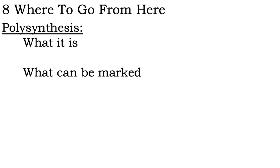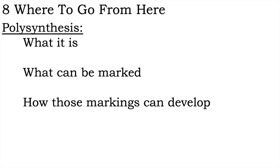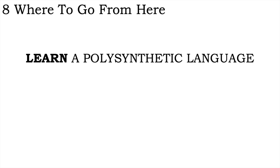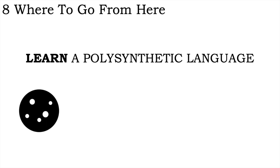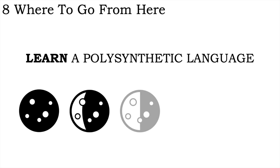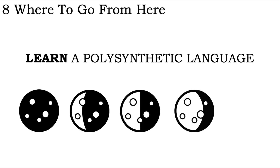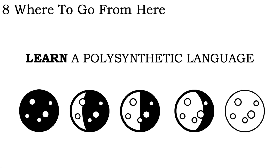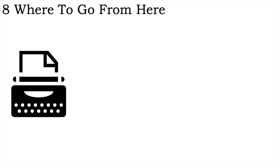Where to go from here? So we've covered the basics of polysynthesis — what it is, some of the many types of meaning and relations that can be marked on the verb in such languages, and some ways in which polysynthetic traits can develop. But where to go from here, in developing your own polysynthetic language or in learning more about them? From personal experience, I can tell you the most effective thing is to learn a polysynthetic language. This takes a tremendous level of dedication and patience, so it's certainly not for everyone, but it can provide you with so much more insight into the myriad possibilities open to you than reading a summary ever could. Failing that, simply reading grammars or grammatical sketches of polysynthetic languages would undoubtedly be helpful.